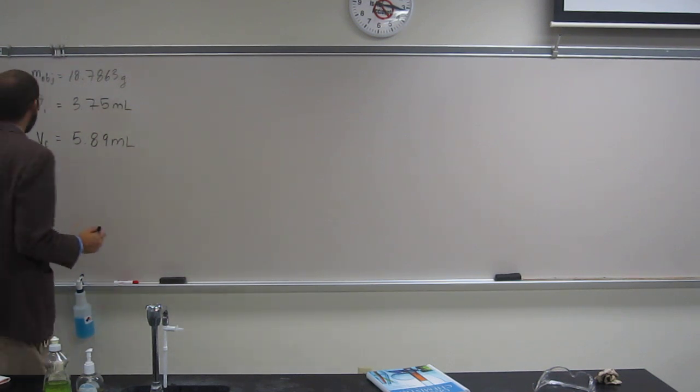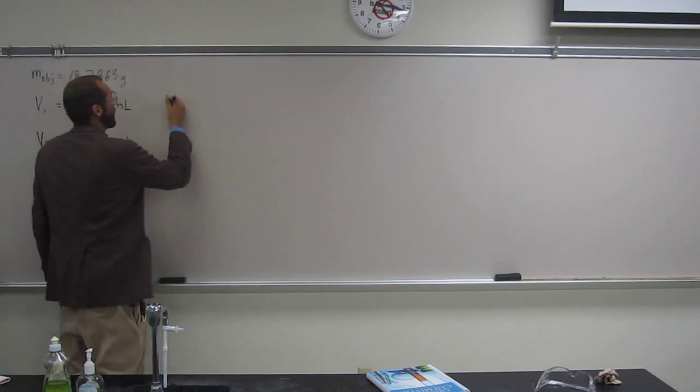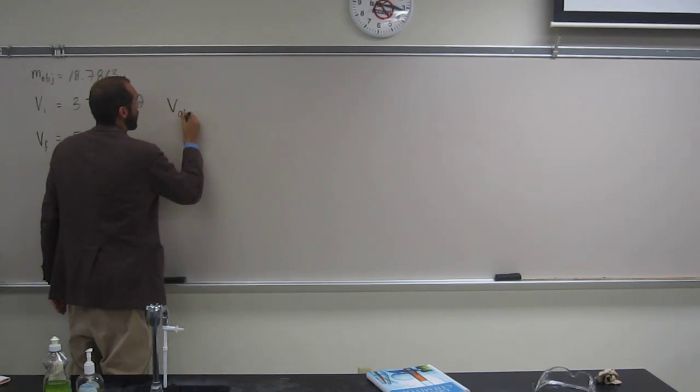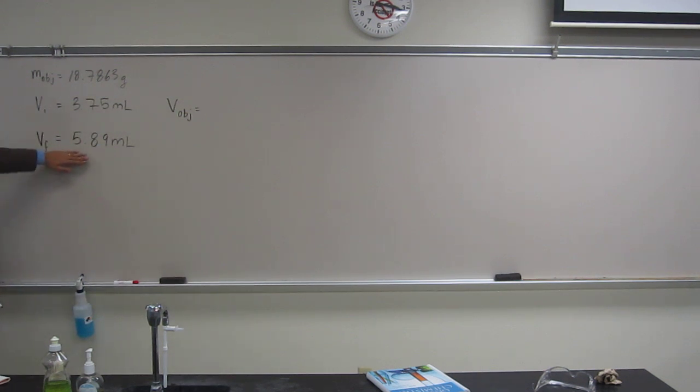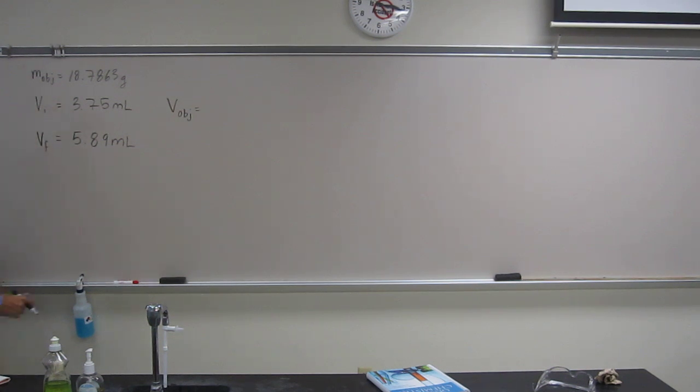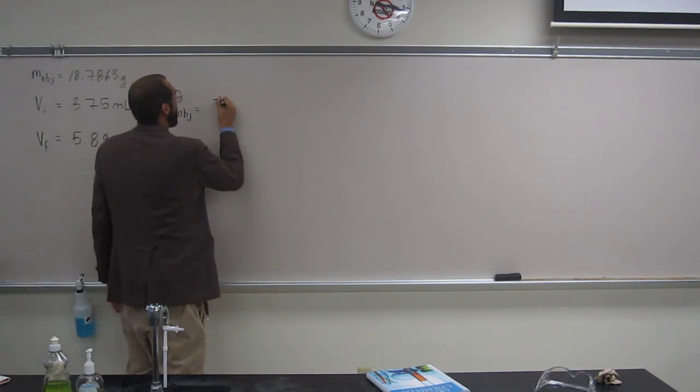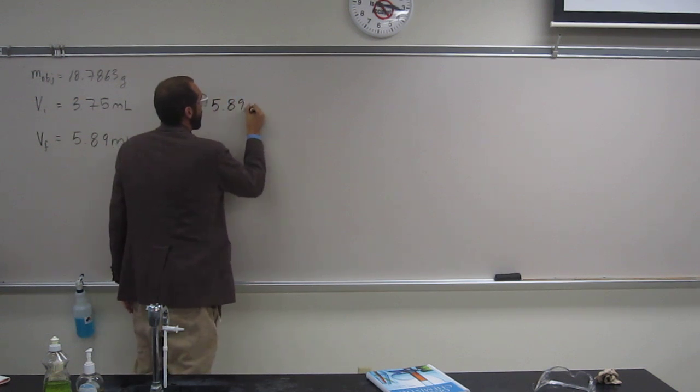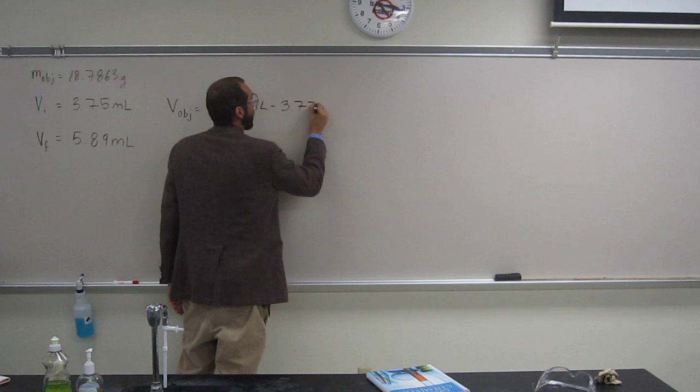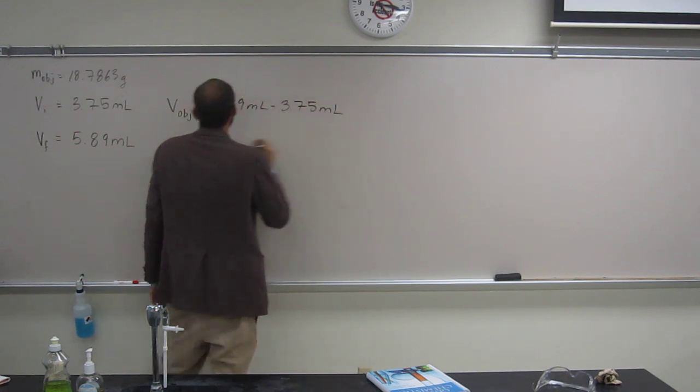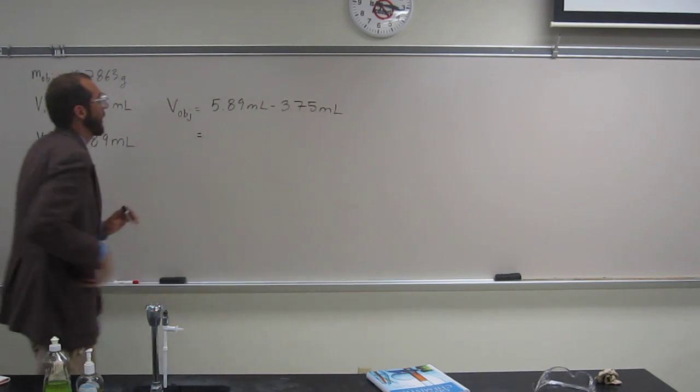Okay, so the volume of the object is the thing that we're going to want to calculate first. So we calculate that by displacement. Before the water was this high in volume, and now it's this high. So what we're going to do is subtract those two numbers from each other, and that will give us the volume of the object.